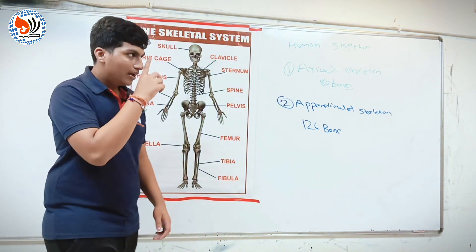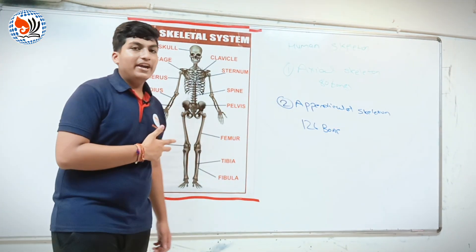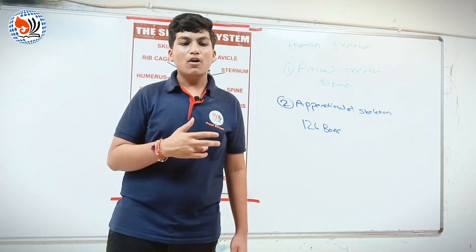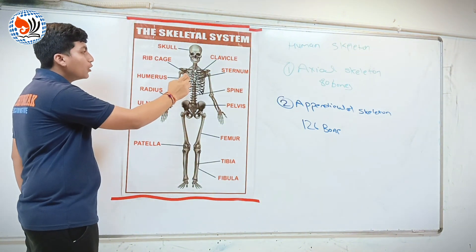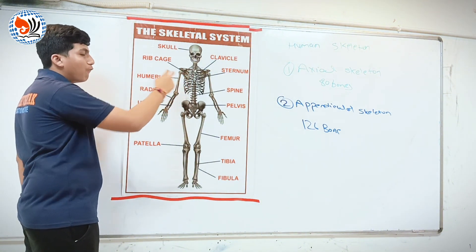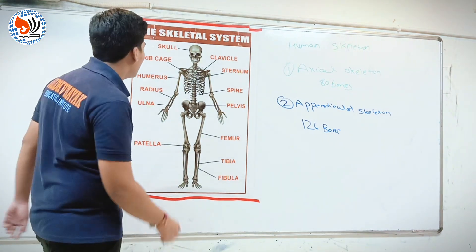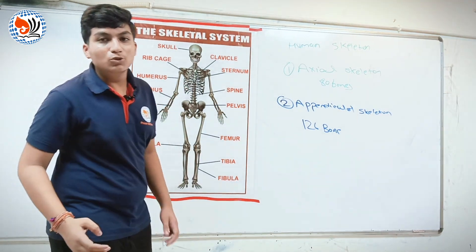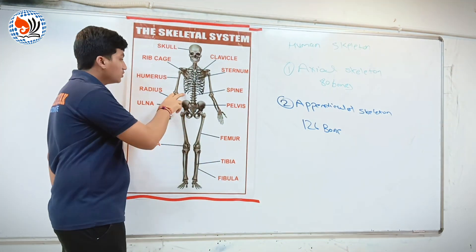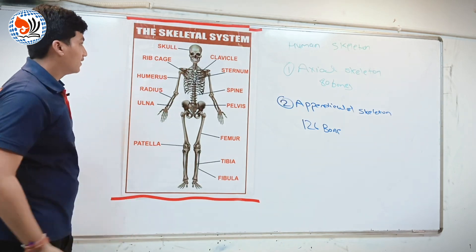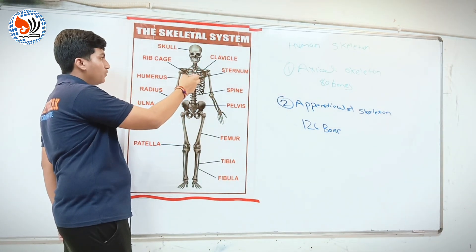Third is ribcage. In ribcage there are 12 pairs of ribs. The 1st to 7th ribs are true ribs. The 8th, 9th, and 10th ribs are false ribs because they are not directly connected to the sternum — they are connected to the true ribs. The 1st to 7th ribs are directly connected to the sternum, that's why they are known as true ribs.